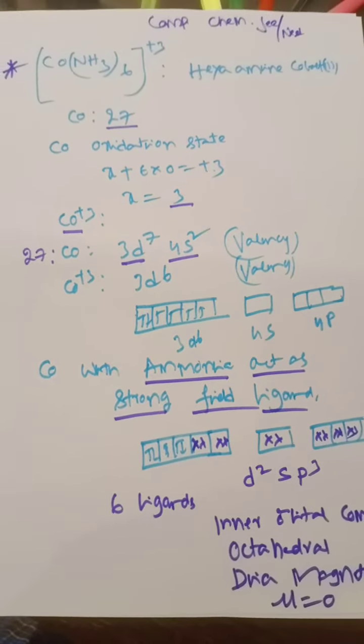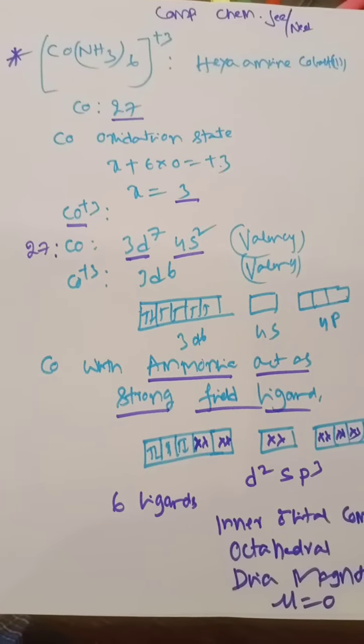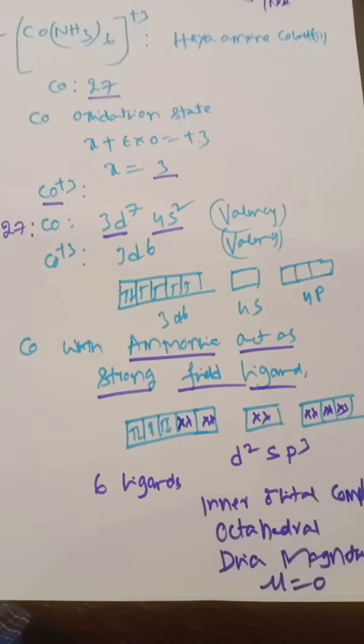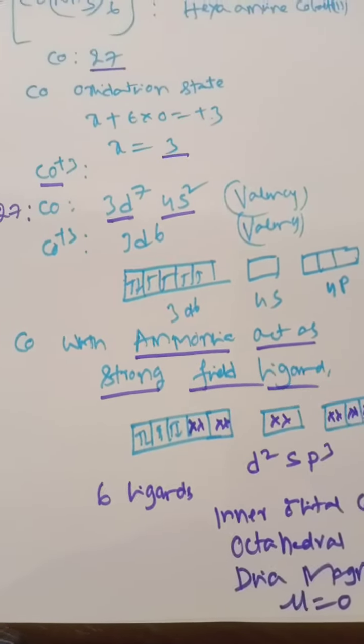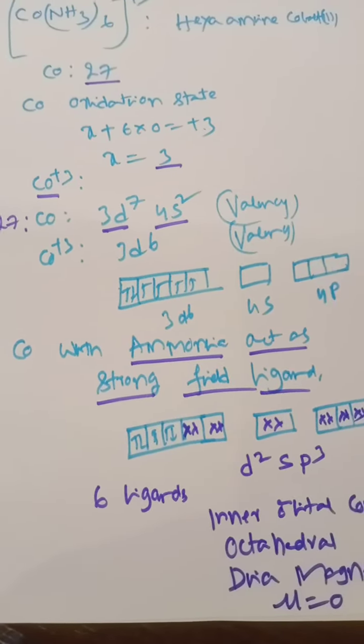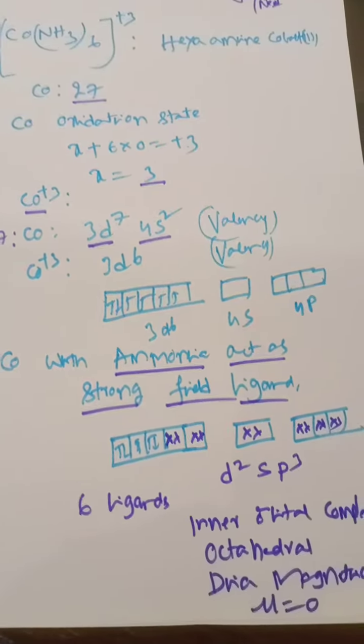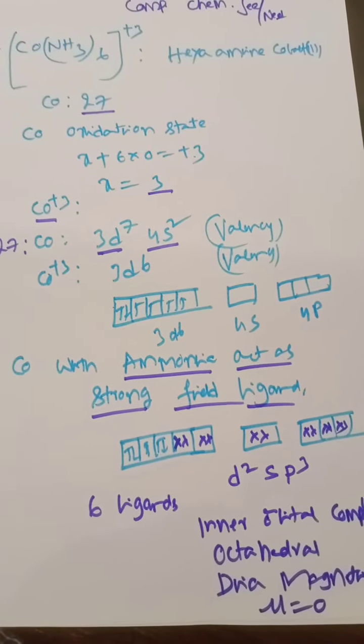So pairing takes place. Because of pairing in the d orbitals, we have two vacant d orbitals, one vacant s orbital, and three vacant p orbitals. Six ligands contribute lone pairs, converting the complex to d²sp³ hybridization.